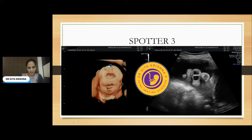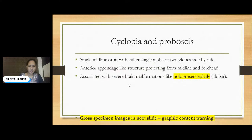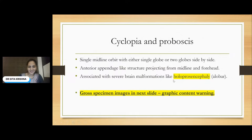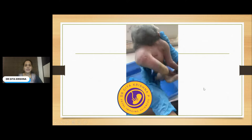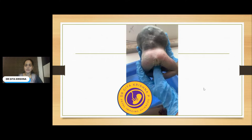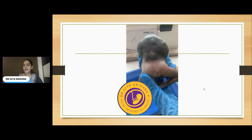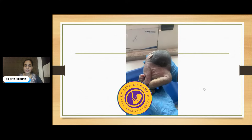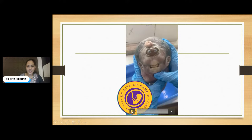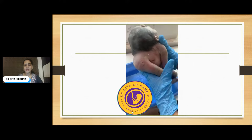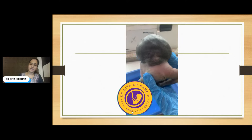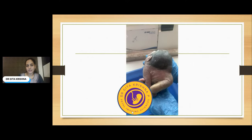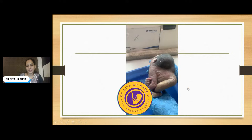This is a 3D image that we could get. I will show you the gross specimen images — graphic content warning. This was the fetus after delivery. The patient came from a very rural area, a Thanda area nearby Hyderabad. She had never had any scans done before, so by the time she came to me it was almost 29 to 30 weeks. This is one of my most favorite and unforgettable cases, because these conditions are very rarely seen. It also had certain heart defects as well as situs inversus totalis.